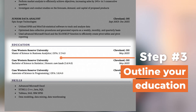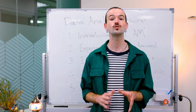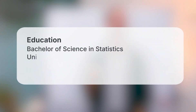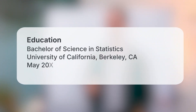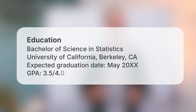Having a relevant degree in a field like mathematics, statistics, or computer science is always helpful in data analytics and will help you stand out. Make sure you include your degree title, name of the college you went to, and your graduation date — or expected graduation date if you're still in school. A solid GPA will always help your case, so include it if you received a 3.5 or above.